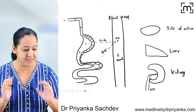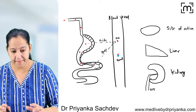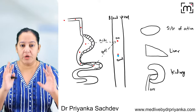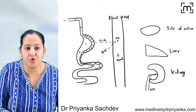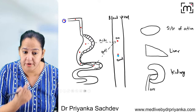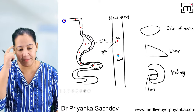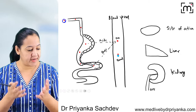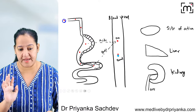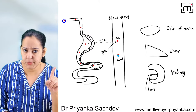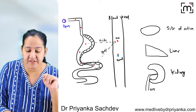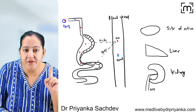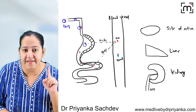Let's understand this with the help of a diagram. Imagine I have any disease and I'm taking a drug via oral route — for migraine, diarrhea, heart failure, or any disease. You can see the system: the drug goes into the mouth, then the esophagus, then the stomach and intestine.